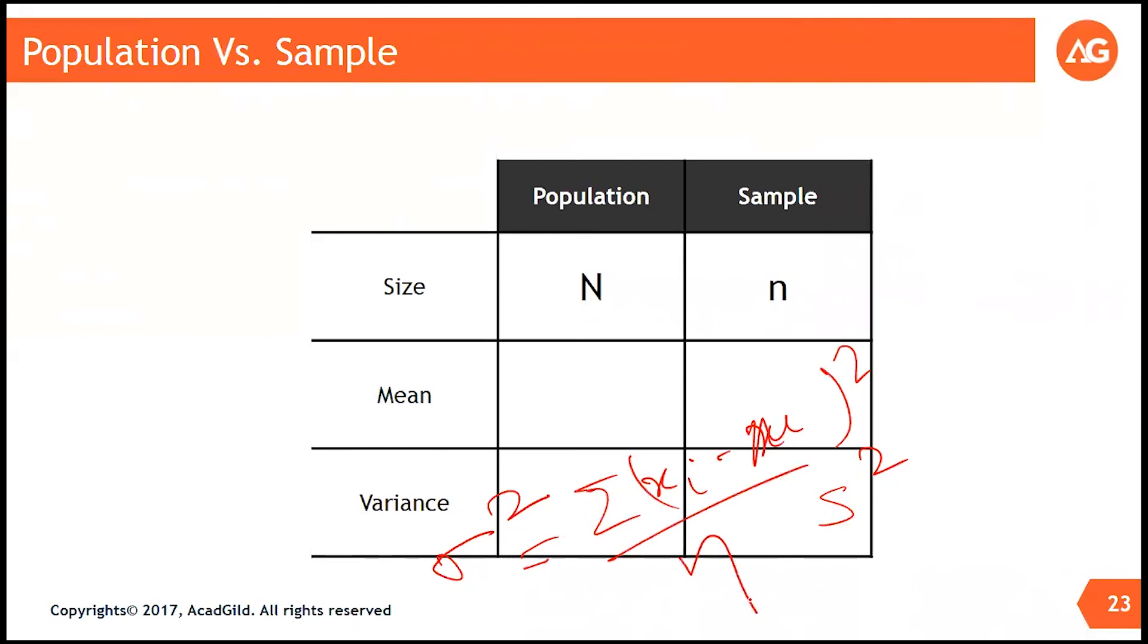And when we calculate the sample variance, instead of dividing by n, we divide it by n minus 1. We will come to this later, why we are using n for population and why we are using n minus 1 for the sample. For the time being, let us keep it that way.